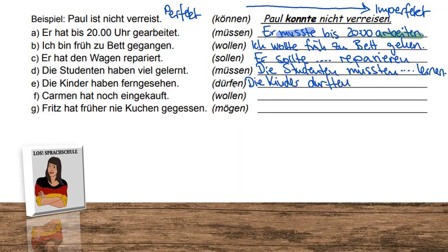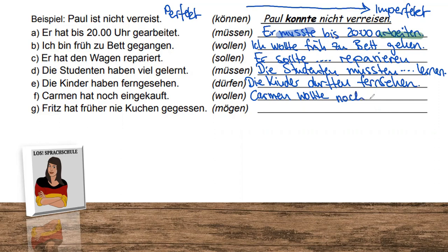We cut off the umlaut, cut off the -en, and add -ten — that's how we build it. 'Die Kinder durften fernsehen' — infinitive. And a useful expression: if someone asks 'Where's Carmen?', you can say 'Sie wollte noch einkaufen' — she wanted to buy something, she'll be back in a second. We use this quite often.